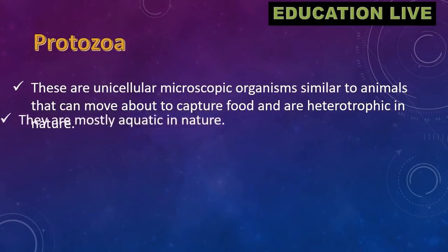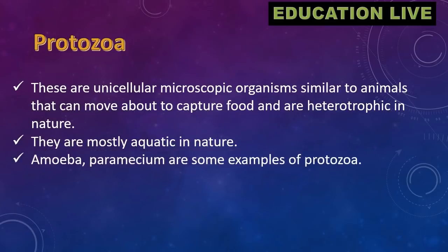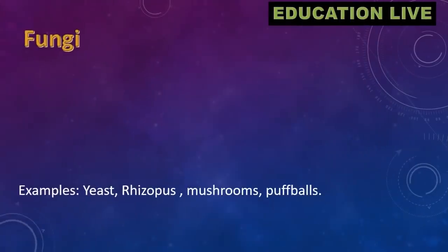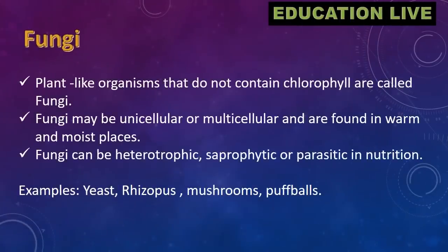Protozoa are unicellular microscopic organisms similar to animals that can move about to capture food and are heterotrophic in nature. They are mostly aquatic in nature. Amoeba and paramecium are some examples of protozoa.